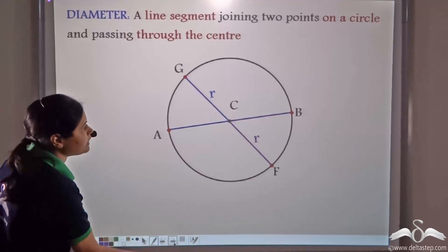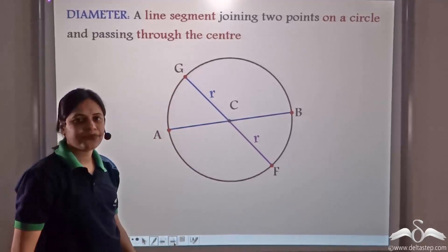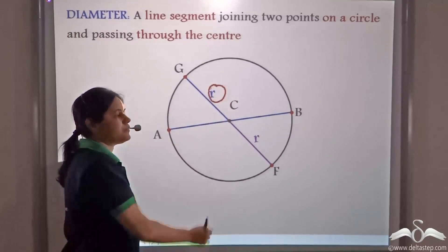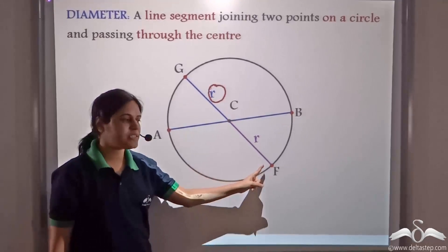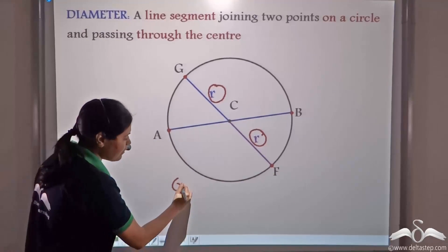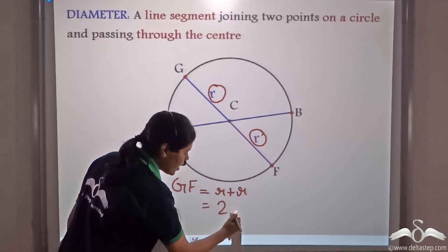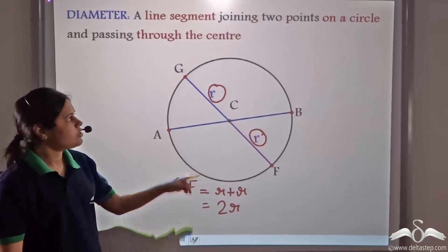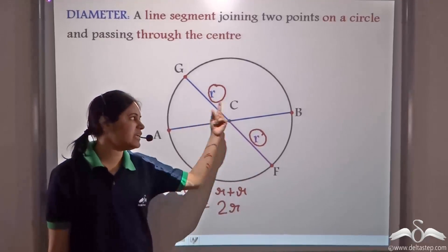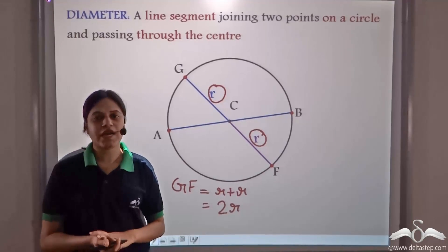Now let us take another diameter GF. The distance GC is the distance of a point on the circle from the centre, which equals R. FC is also the distance of a point on the circle from the centre, which equals R. So diameter GF equals R plus R, which equals 2R. In fact, the length of any diameter is equal to 2R.